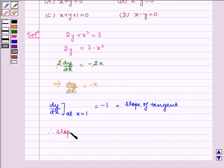Therefore slope of normal is equal to minus 1 divided by dy by dx at x equals 1, which is equal to 1.